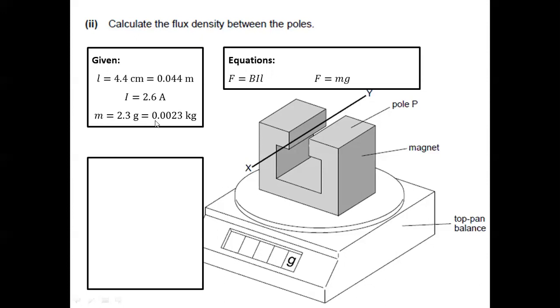For our solution, we just have to equate the two equations. So we have BIL is equal to MG. And manipulating this equation, we'll have B is equal to MG over IL.